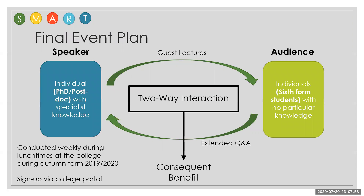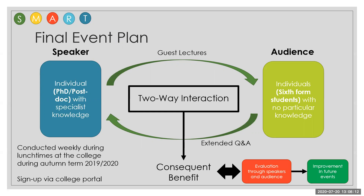Now we've built a final plan: we have the speaker, the audience, the two-way interaction, and the consequent benefit. For timing, we decided with John that these would be conducted weekly during lunchtimes at the college, and we'd get an idea of numbers through a sign-up on the college portal. We could then analyze and evaluate the consequent benefit through surveys and questions from both speakers and audience, and use that to build improvements for future events.